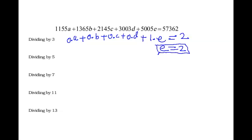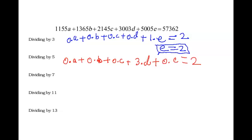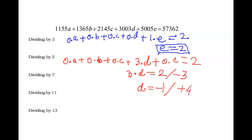Now dividing by 5: the first, second, and third numbers are all divisible by 5. But 3003 is not divisible by 5 — it gives a remainder of 3. The overall remainder of 57,362 divided by 5 is 2. So the equation is 3 × d = 2. Using negative remainders: the positive remainder is 2, so the negative remainder is minus 3. Then 3 × d = minus 3, giving d = minus 1. A negative remainder of minus 1 means a positive remainder of plus 4, so d = 4.